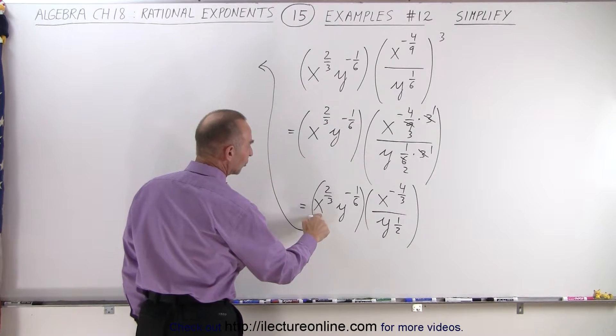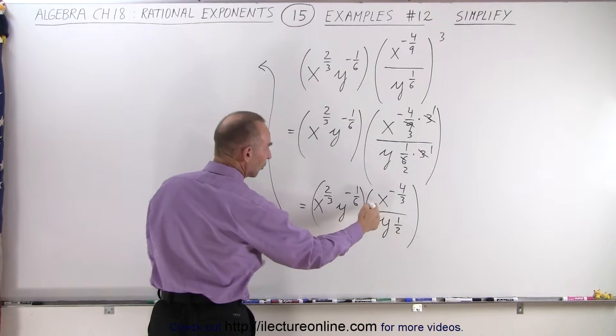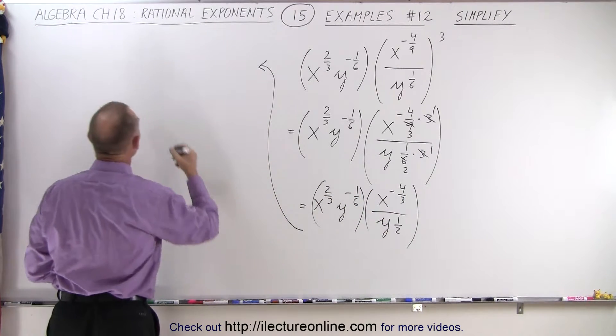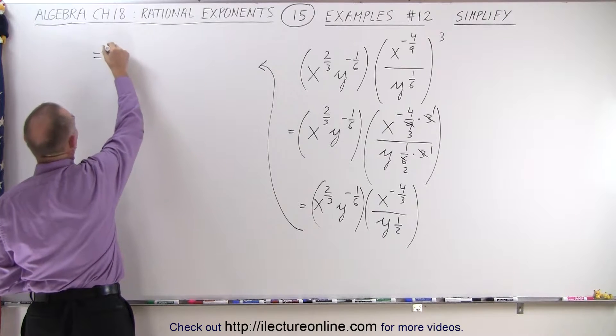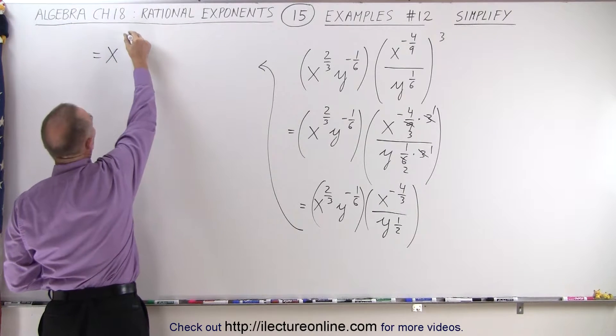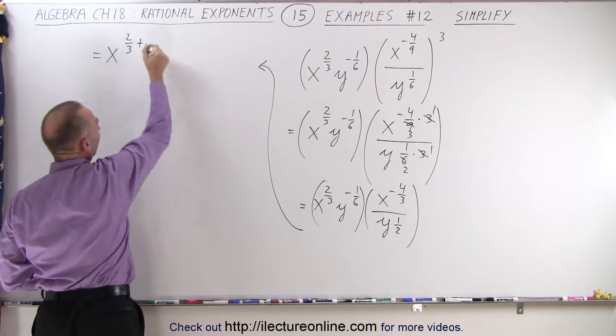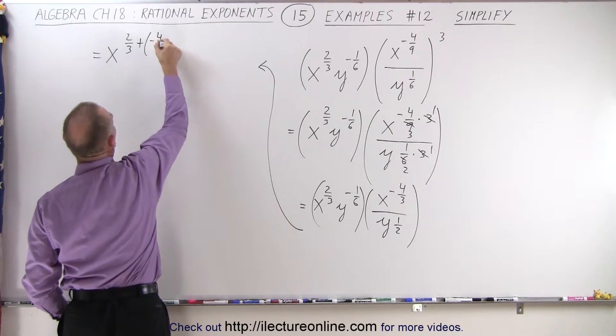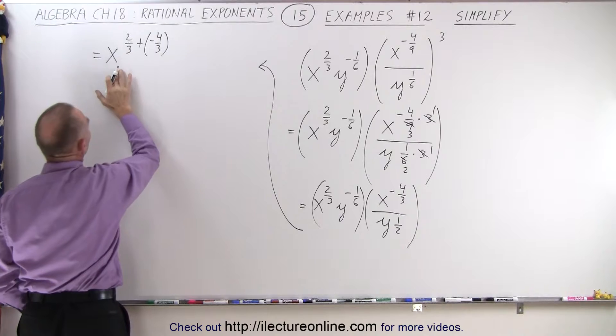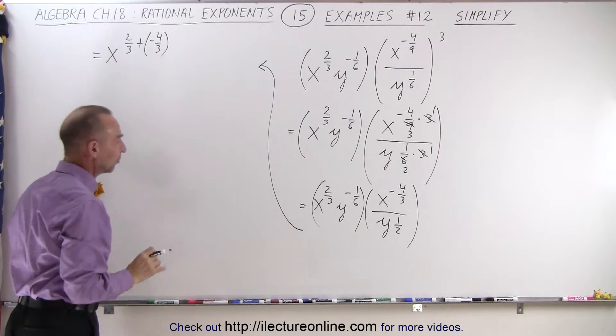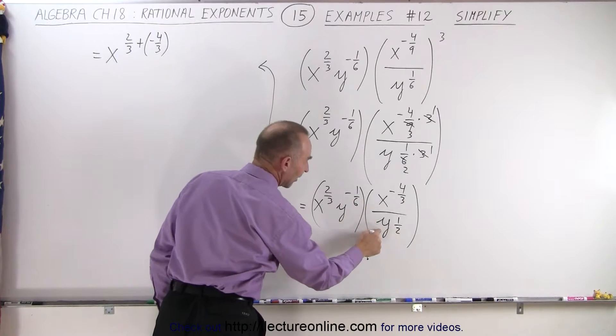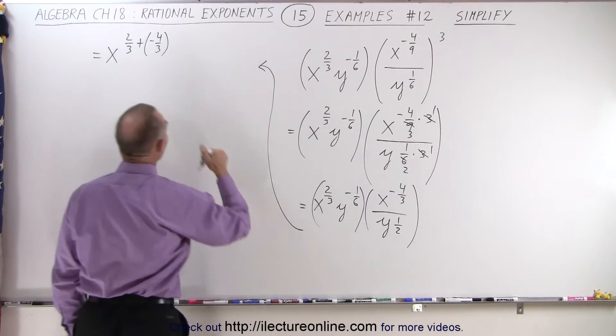First of all, we're going to multiply x to the two-thirds times x to the minus four-thirds. The bases are the same, which means we're going to add exponents. So this becomes equal to x to the two-thirds power plus a negative four-thirds power. So strictly by the rules, we're multiplying, so we're going to add exponents. And then here we're dividing y to the minus one-sixth, divide by y to the one-half, so we're going to subtract exponents,